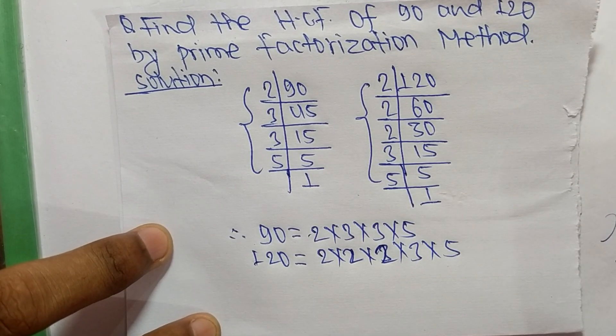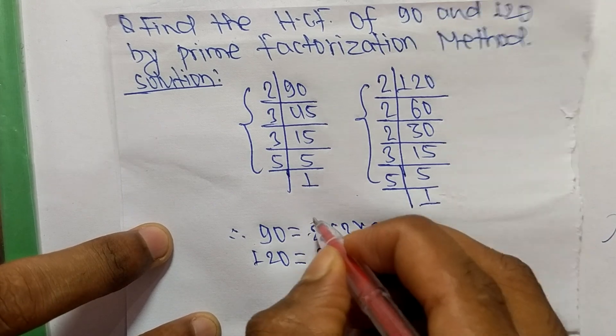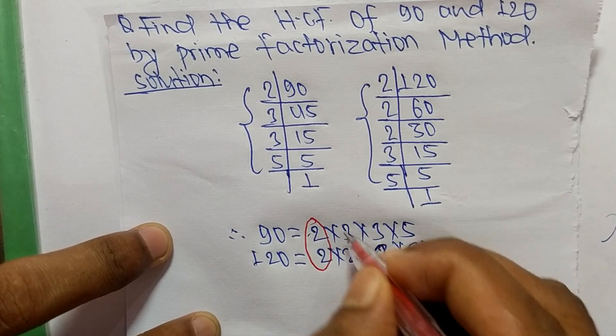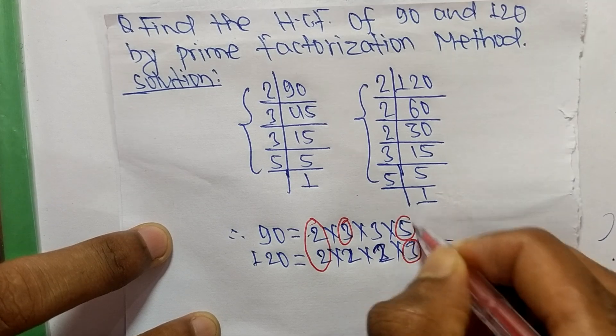Now we select the common factors in this prime factorization. First common factor is 2, second one is 3, and third one is 5.